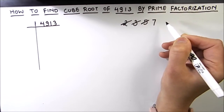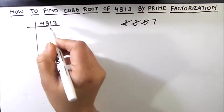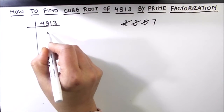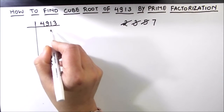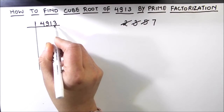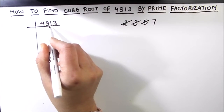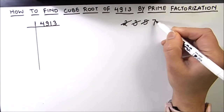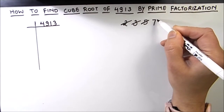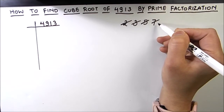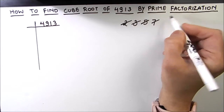The next prime number is 7. Let's divide 4913 by 7: 7 times 7 is 49, then 7 times 0 is 0, and the remainder is 13, which is not fully divisible by 7. So 7 is also not a factor of this number.